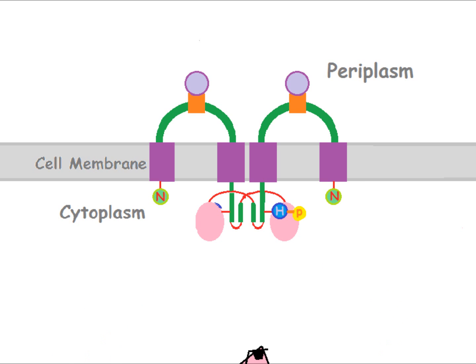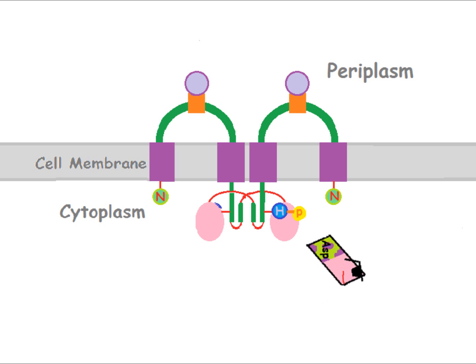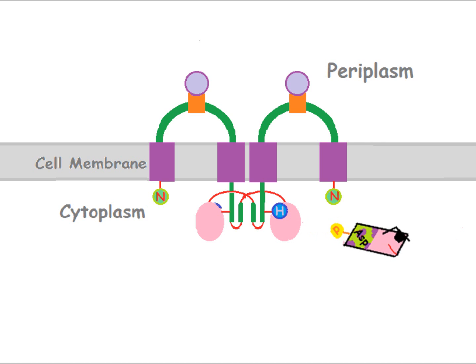The second system component is a response regulator, shown here in sunglasses. This consists of a variable and a conserved region that contains an aspartate acid residue. When the terminal region of the response regulator lines up with the histidine residue, it picks up the phosphate.